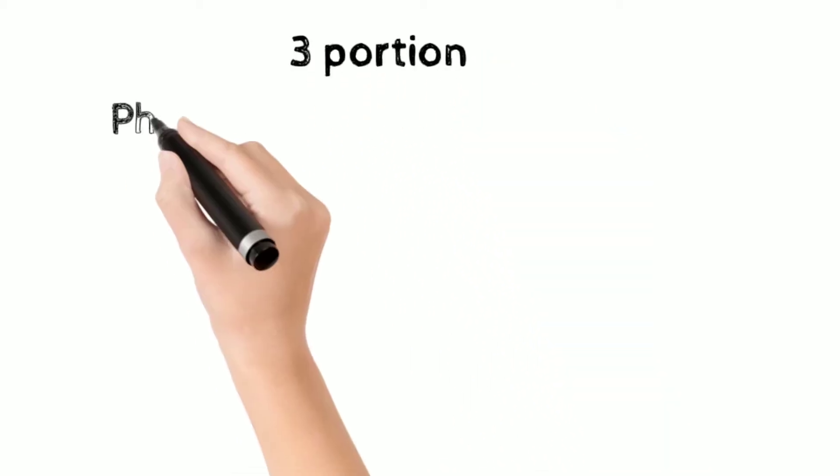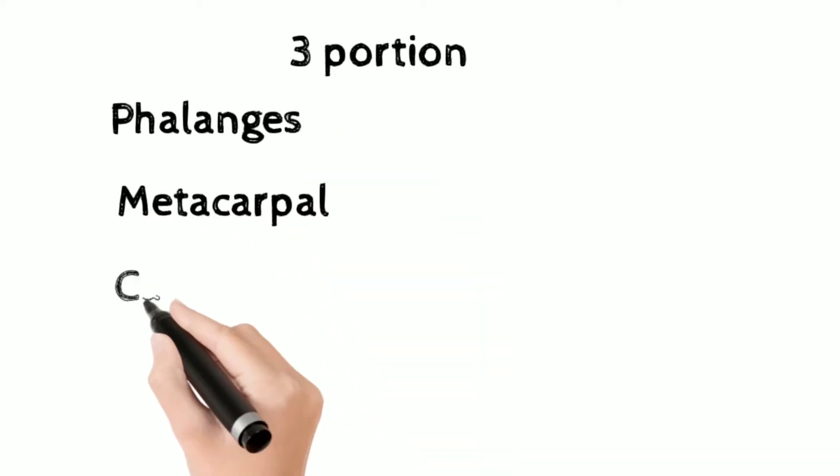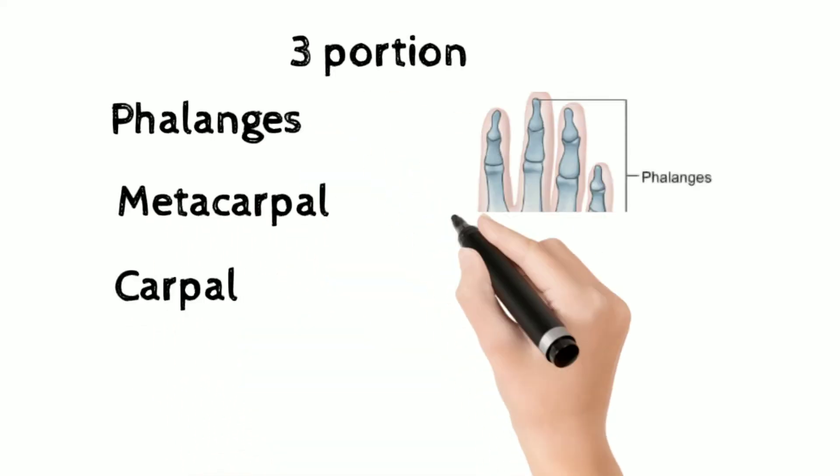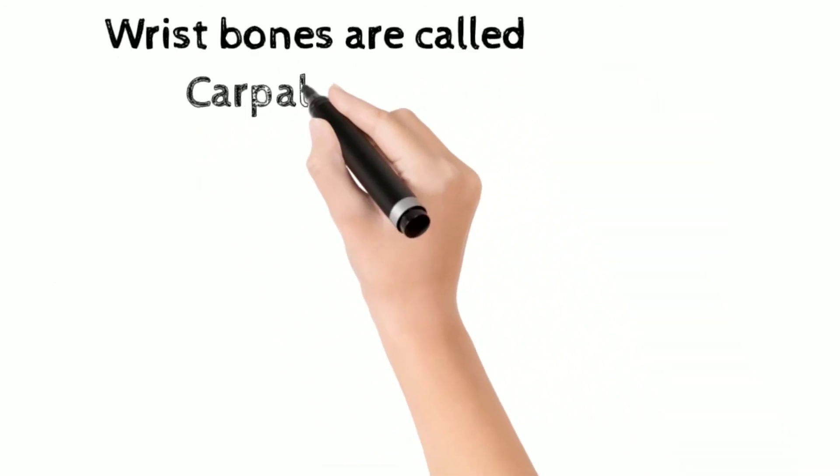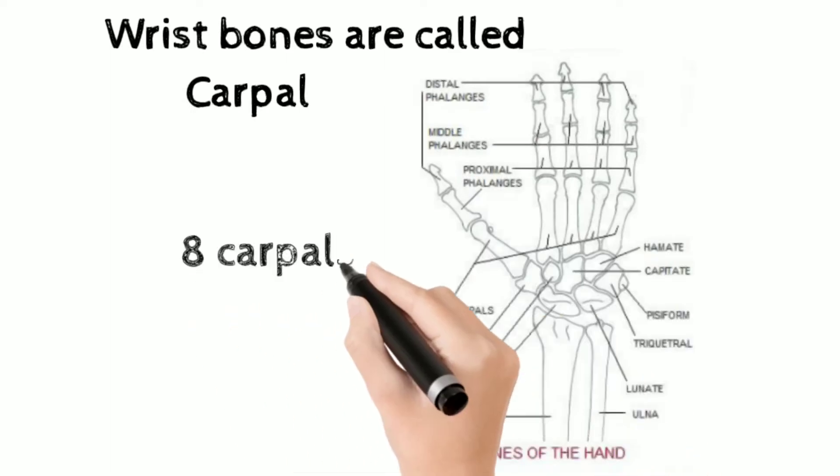First is the phalanges, second one is the metacarpal, and the third one is the carpal. Starting with the lower portion, that is the carpal portion. The wrist bones are called carpal and there are about eight carpal bones.